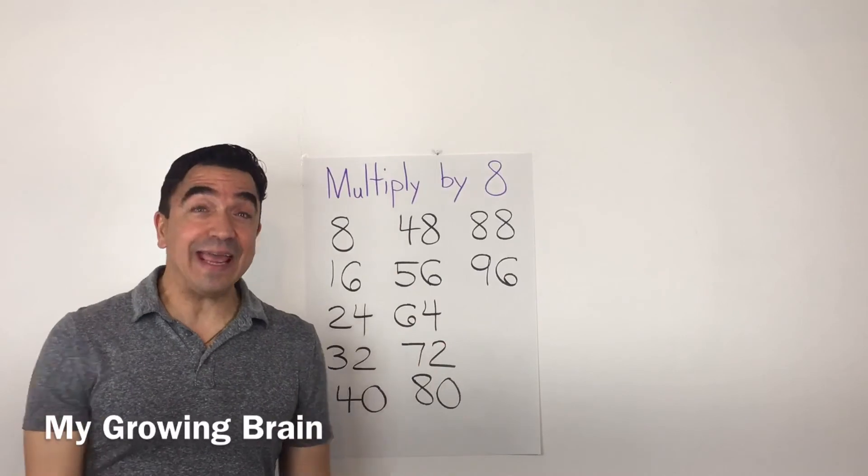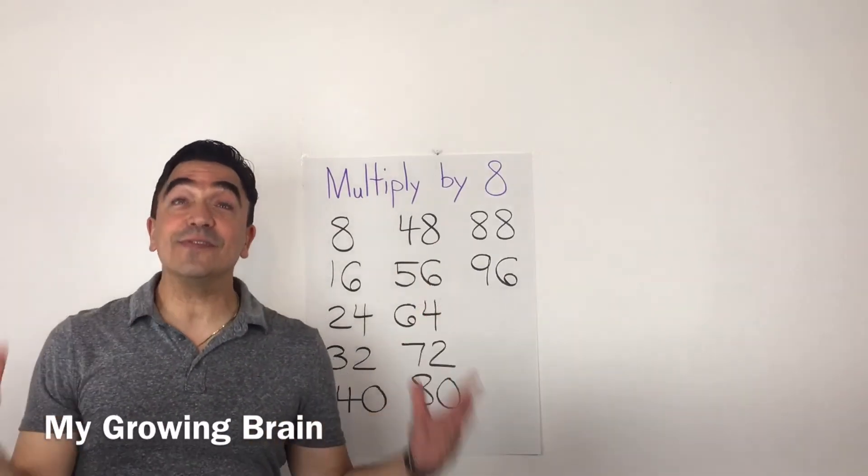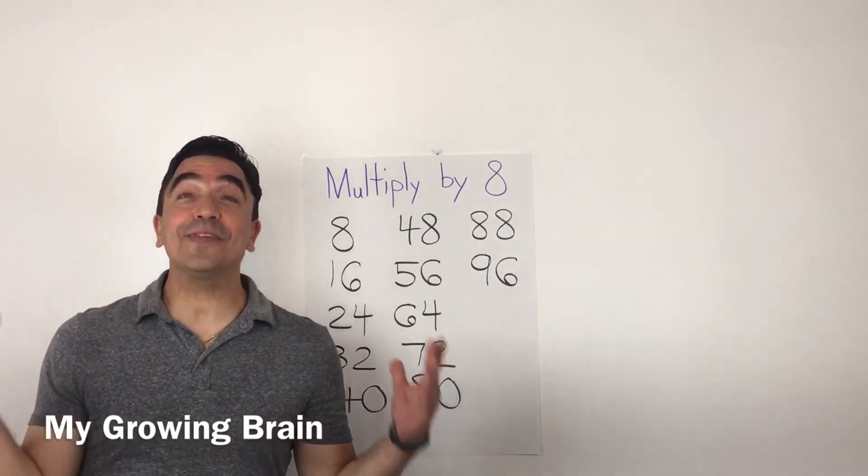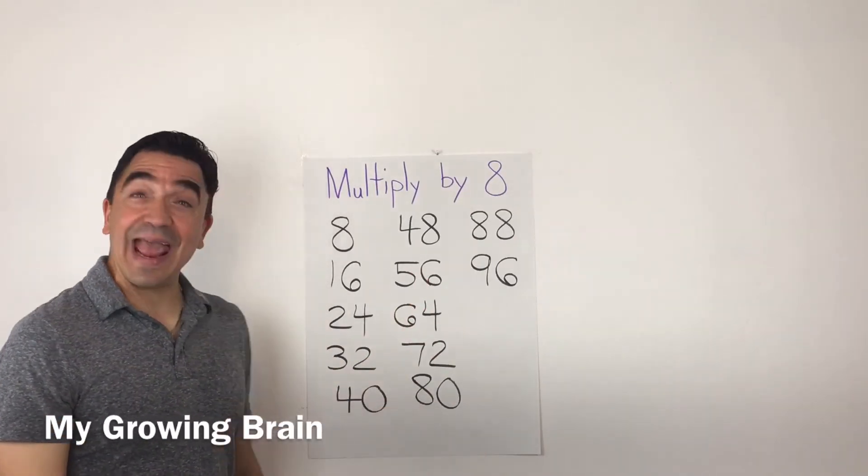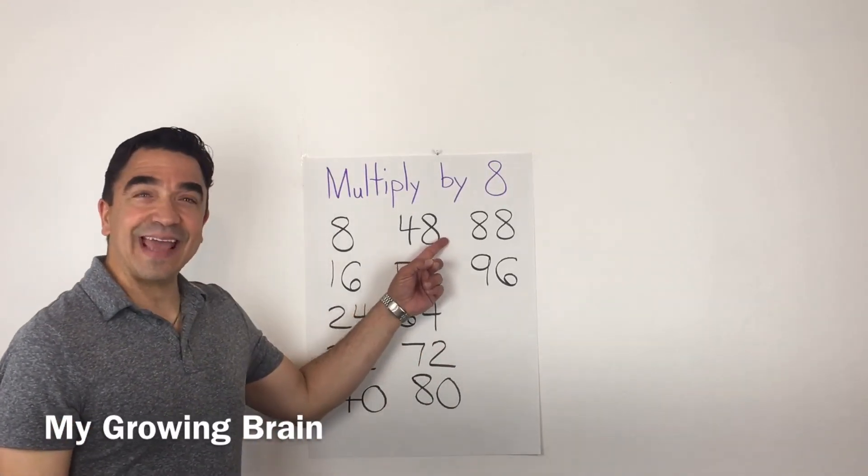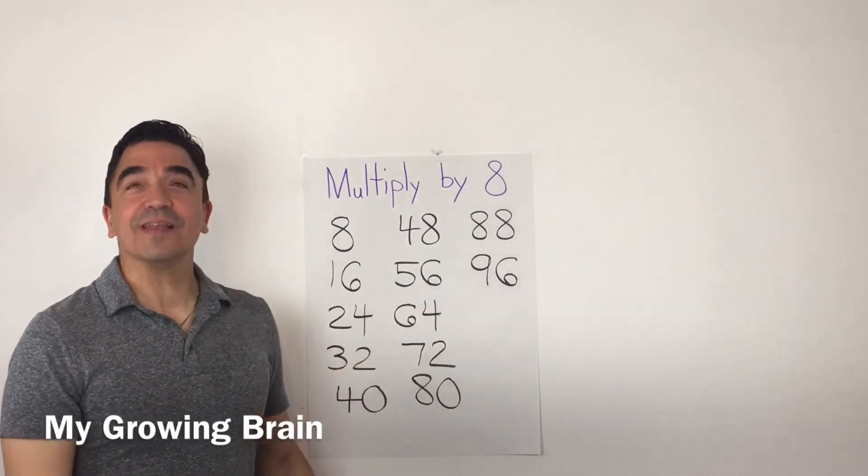8 times 8, 64. 8 times 9, 72. 8 times 10, 80. 8 times 11, 88. And 8 times 12, 96.